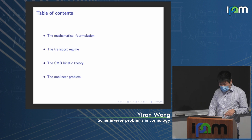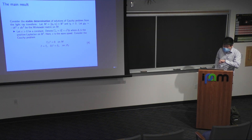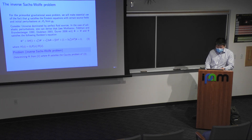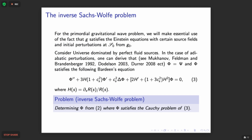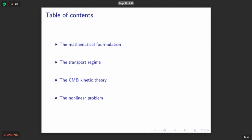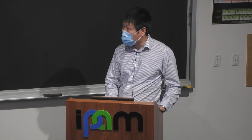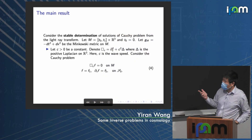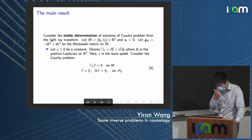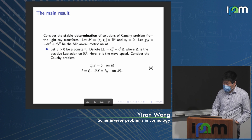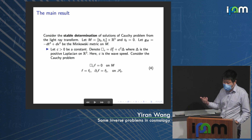We are not just interested in unique determination of φ but also in stable determination, which is important for actual reconstruction and generalization to stochastic models. For the transport regime result, I consider a simple setup where M = [T₀,T₁] × R³ with the Minkowski metric. We consider a simple wave equation ∂²_t + C²Δ, where C ≤ 1 is a constant wave speed. We consider the corresponding Cauchy problem — this is a simple model for Bardeen's equation.